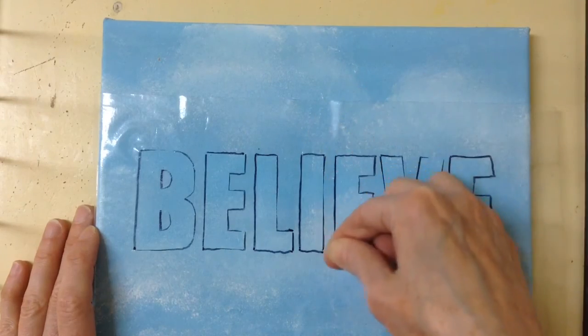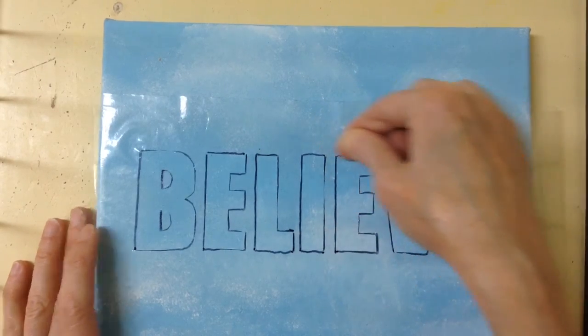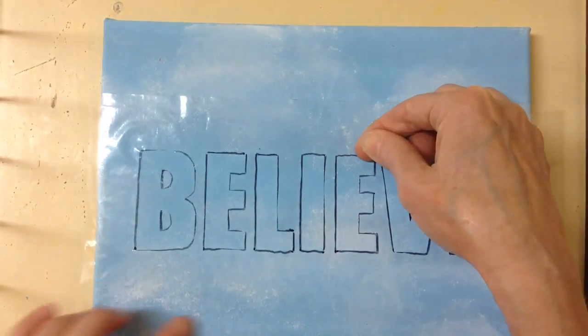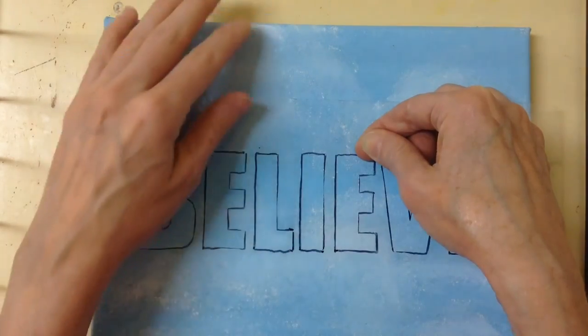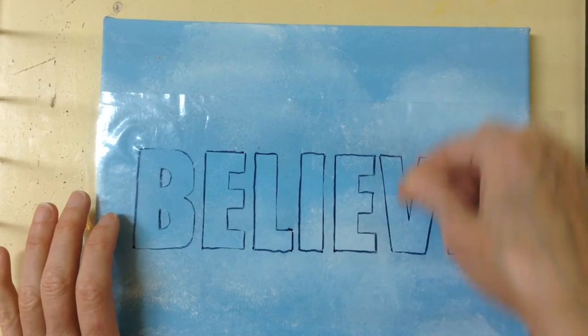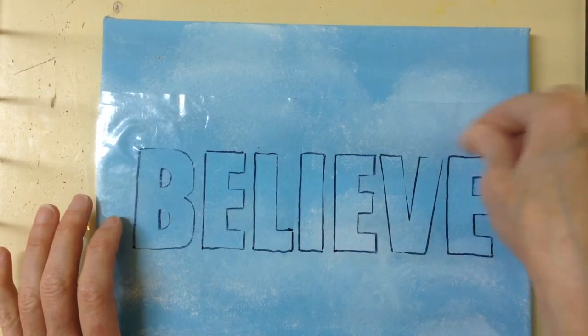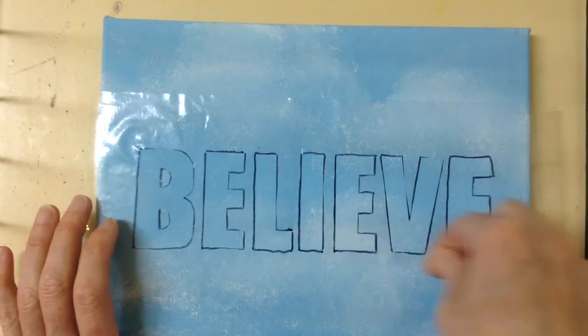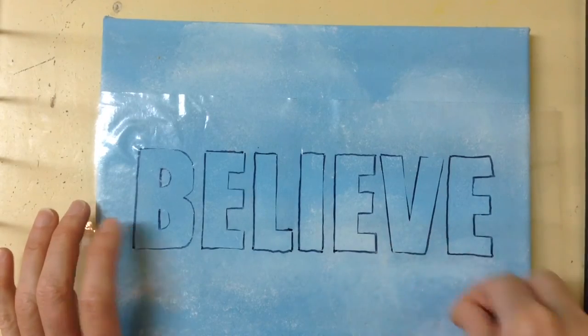And then what you can do now is you can cover the rest that the MacTac hasn't covered and you can spray paint any color you want to make the letters. But I'm going to actually use acrylic paint to show you how to do that.